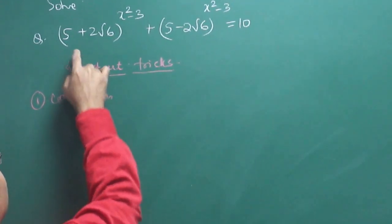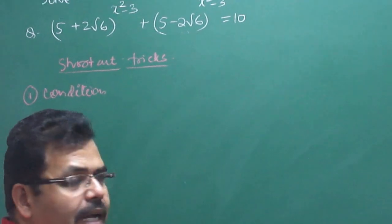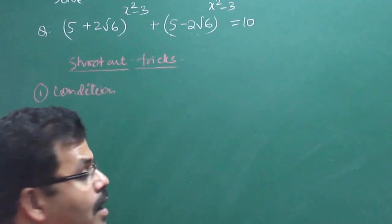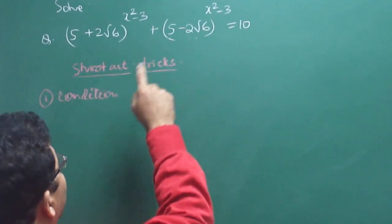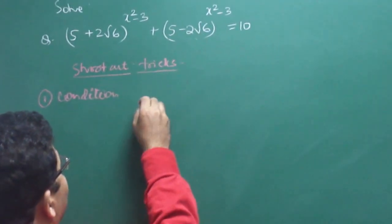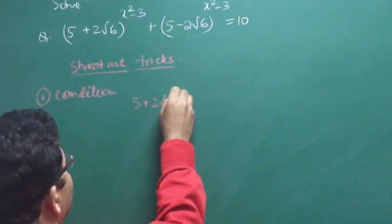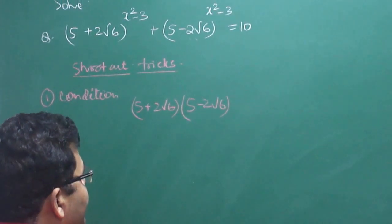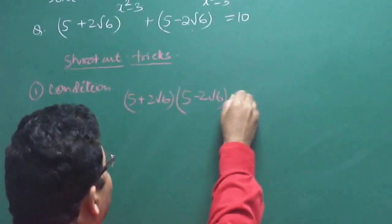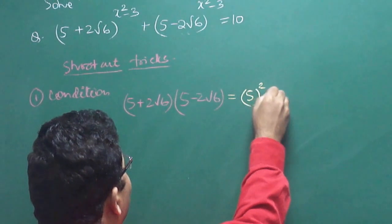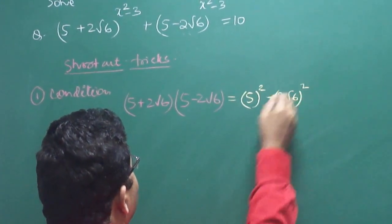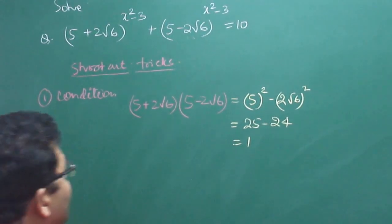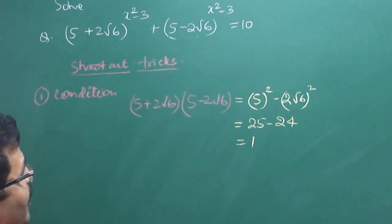The condition is that these two irrational functions should be conjugates. Their product is 1: (5 + 2√6) multiplied by (5 − 2√6) — using the identity (a + b)(a − b) = a² − b² — gives a result of 1. So the product is 1.